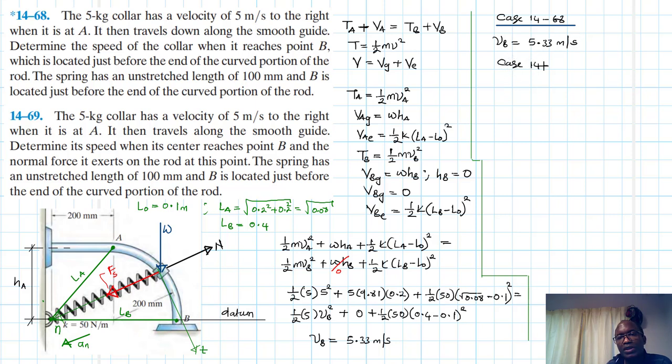Once we have this, we have determined the velocity which is one part of the problem. So for case 14-68, we have calculated our VB and it's equal to 5.33 meters per second. Then we go to case number two which is 14-69. They are asking us to find the same thing, the speed when it reaches B. So the speed remains the same, doesn't change: VB equals the same 5.33 meters per second.